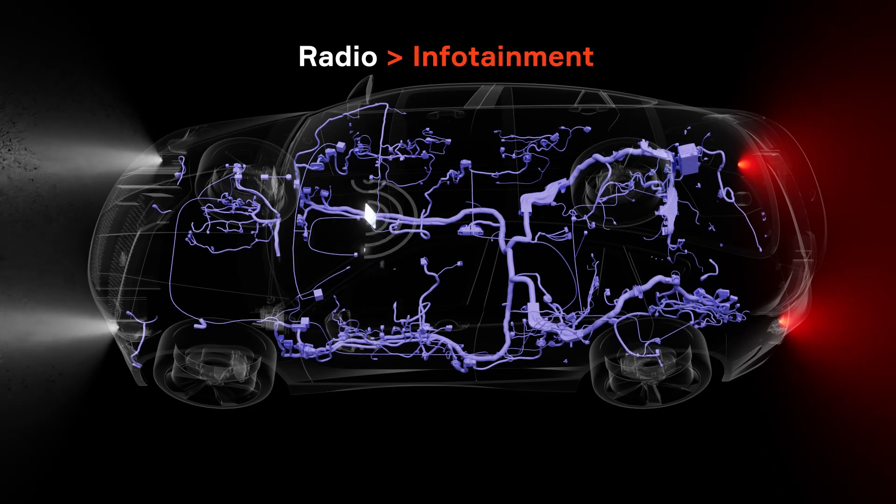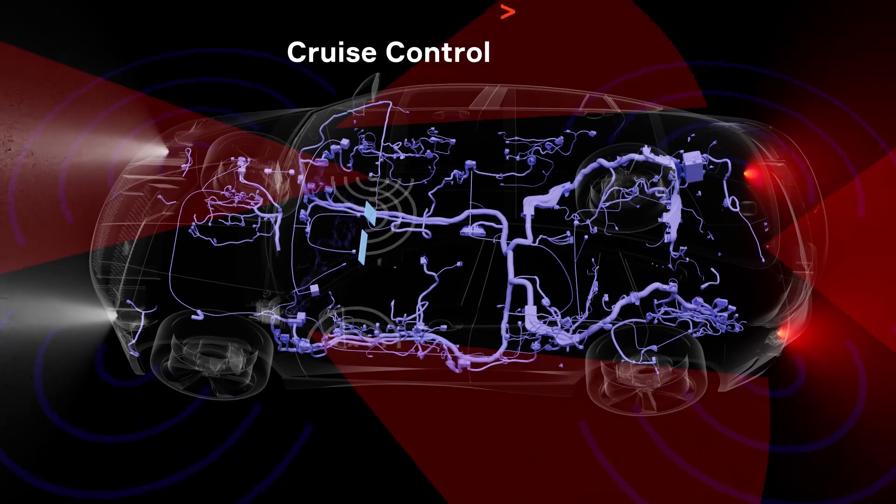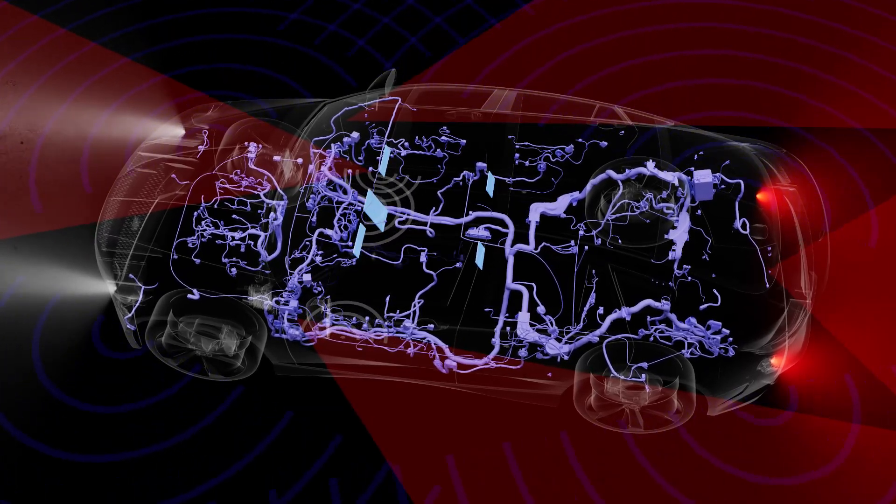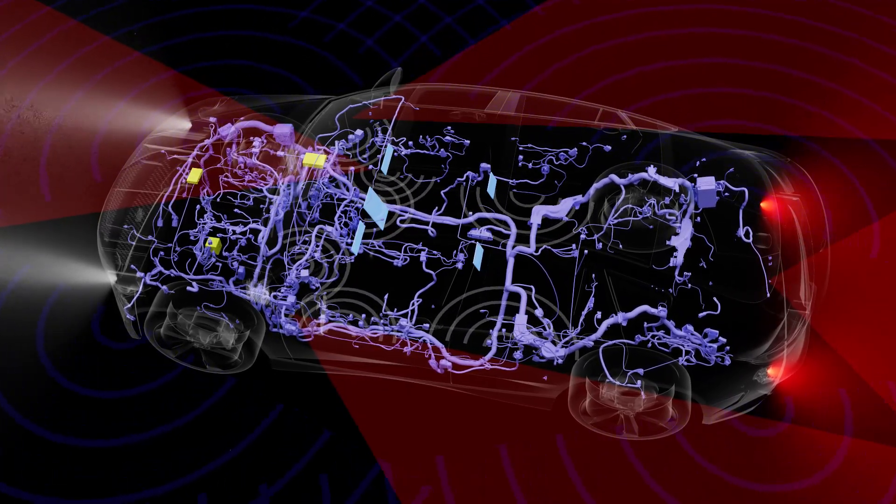Radios became infotainment systems. Cruise control became ADAS. Radars and touchscreens became standard equipment. Every feature required its own ECU, its own box.